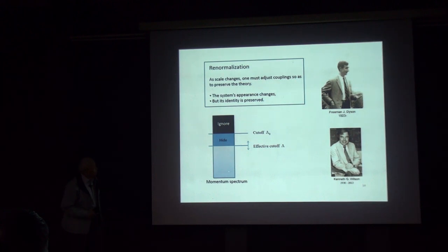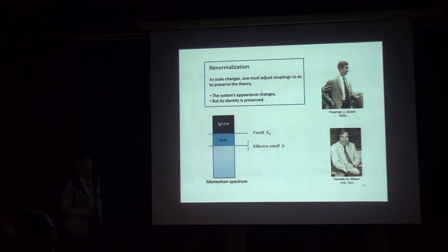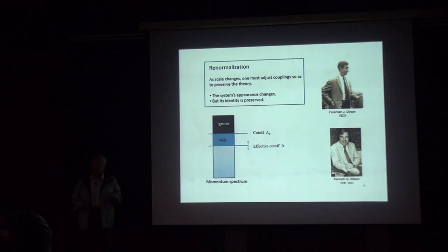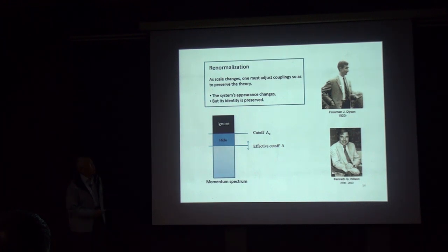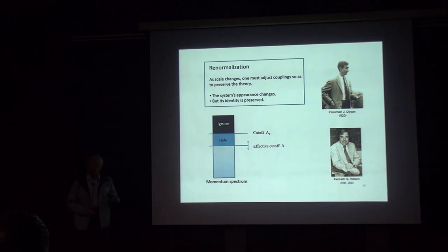If this is the momentum spectrum of the theory, we define a theory with a cutoff Lambda-zero, ignoring everything beyond it because at high momentum the theory cannot describe the phenomena we aim to study. When you work at a lower-momentum phenomenon, you lower the cutoff by absorbing those modes into adjusted constants of the theory, giving it a different appearance while its identity does not change. This is very common — like looking at a picture: at normal scale you see it clearly, but under a microscope you see only pigment, and further still, atoms.